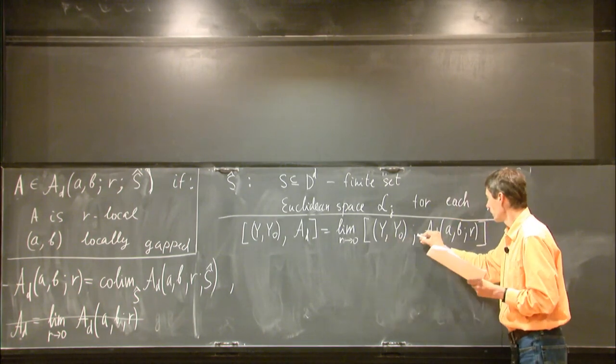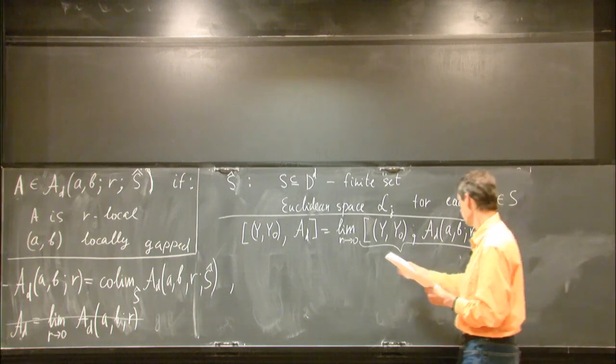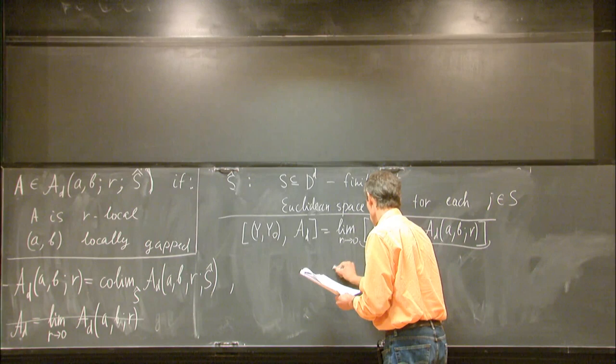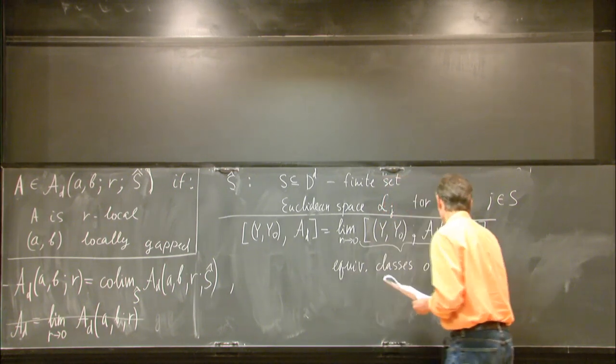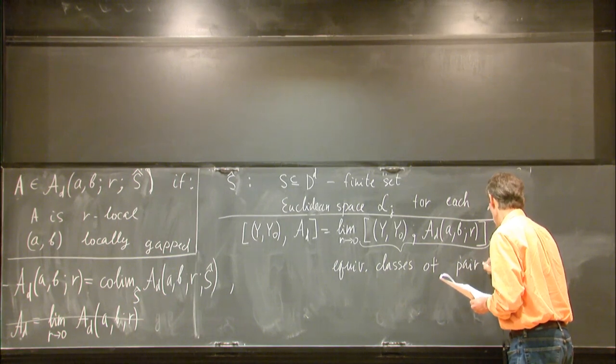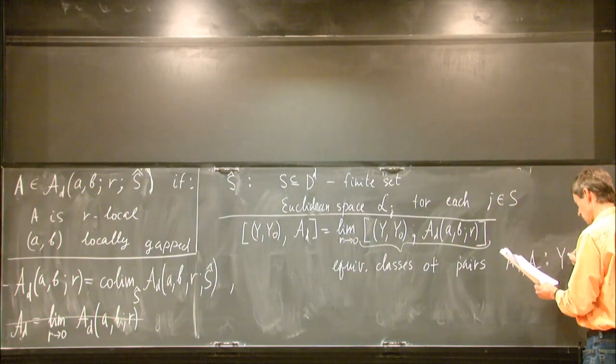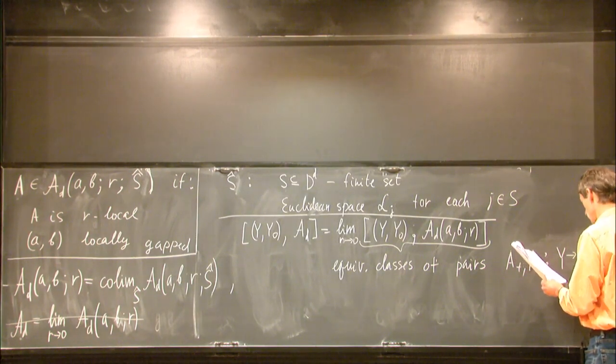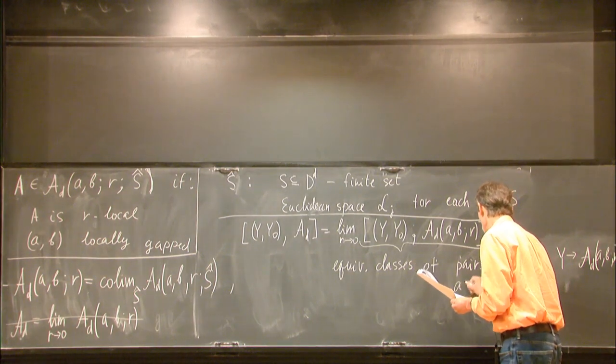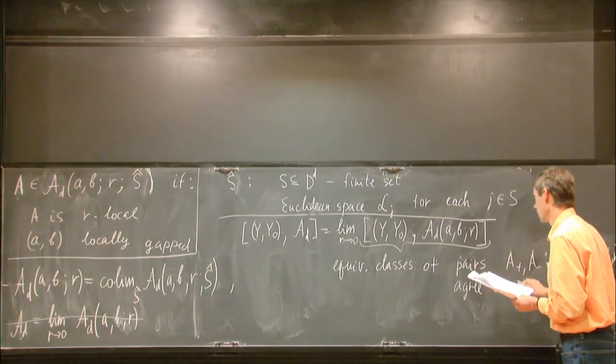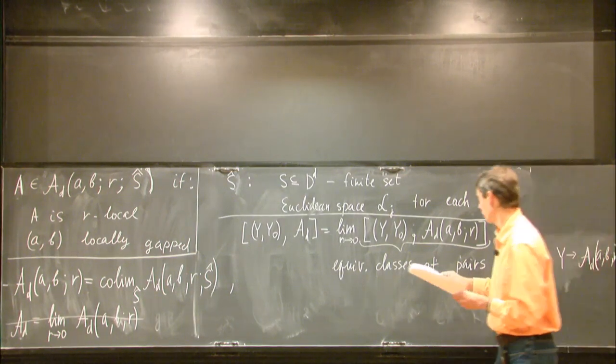So I can define this guy. The idea is to define a spectrum. This A sub D is supposed to be a spectrum. It should define a generalized cohomology theory. And we first define the cohomology groups and then use the representability theory. So the definition looks like this. So that is a pair of spaces. And this guy is, by definition, a relative growth in D group, which is defined like this. Equivalence classes of pairs.